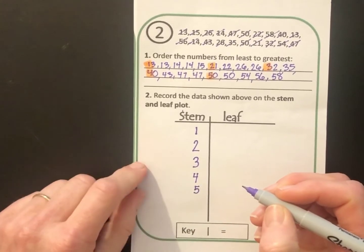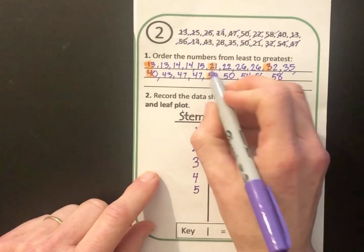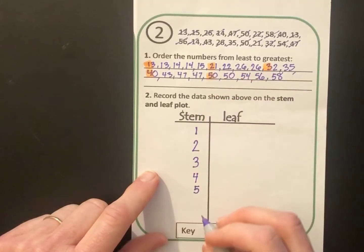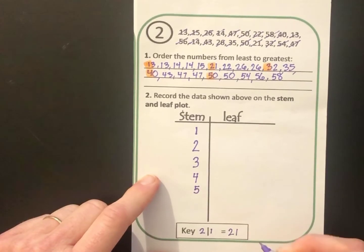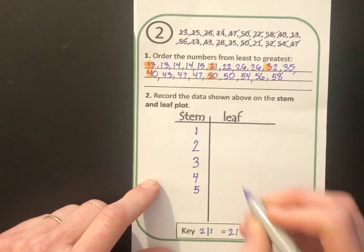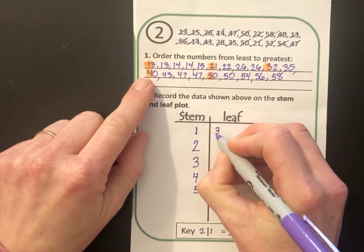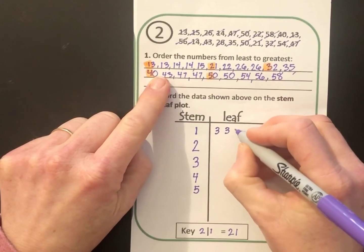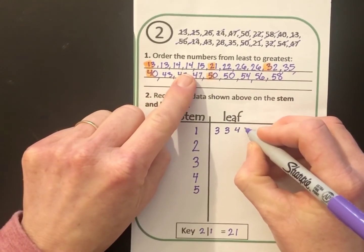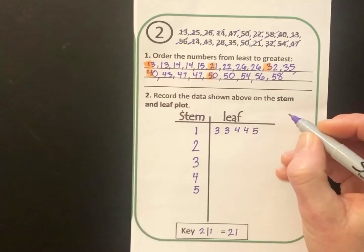Before I go on to the next step, let me go ahead and fill out the key. I'll just pick a random number at the top and I'll use that for my key. 21 looks good. So 2 line 1 stands for 21. Now it's time to start the leaves. I'll go with my first stem of 1 and I'll write the leaves that go along with that. I have two 13s, so I'll write two 3s, two 14s, so then I'll write two 4s, and then I have a 15, so I'll write a 5. So that gives me for my first row 13, 13, 14, 14, and 15.